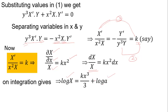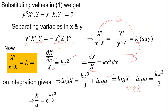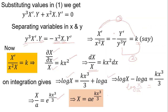Taking log a to the left side: log X - log a = k·x³/3, which gives log(X/a) = k·x³/3. Therefore X/a = e^(kx³/3), and multiplying both sides by a, we get capital X = a·e^(kx³/3). This is the first solution.